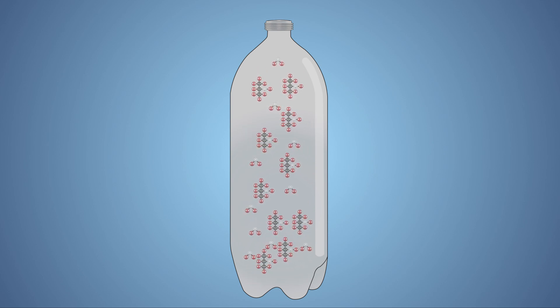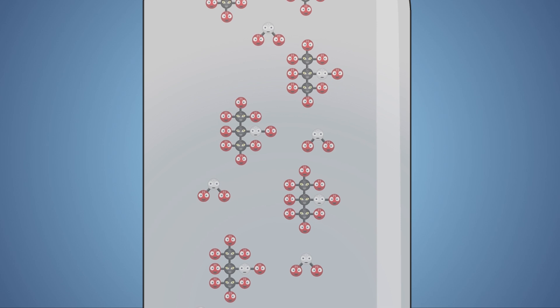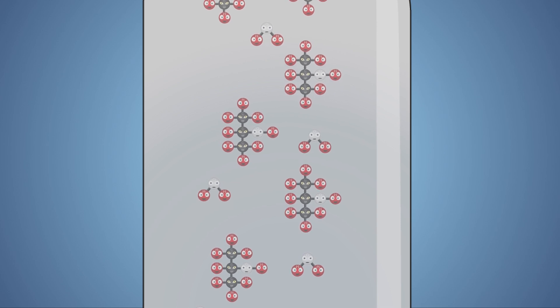Normally when a gas condenses, it needs a surface to stick to, but the shock of the sudden release in pressure causes the alcohol to condense in the air, creating a cloud of alcohol in the bottle.